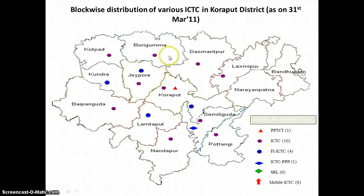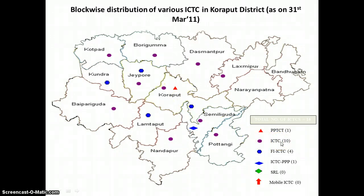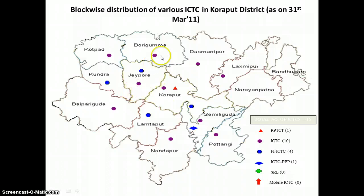We are now going to see the ICTC maps. This is how our ICTC facilities are spread across the district in 14 mandals. We have PPP ICTCs in Koraput, that is our district headquarters. We also have standalone ICTCs, which are ICTCs run by SACS directly. We have such ICTCs in 10 mandals, including Palli Guda, Jayapur, Ghori Guma, and Koraput. We also have facility-integrated ICTCs.